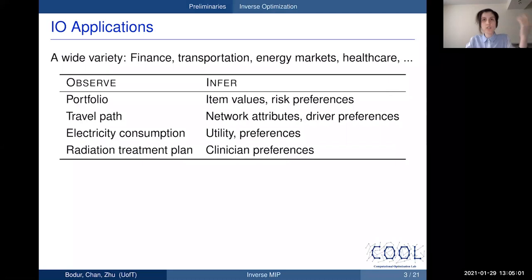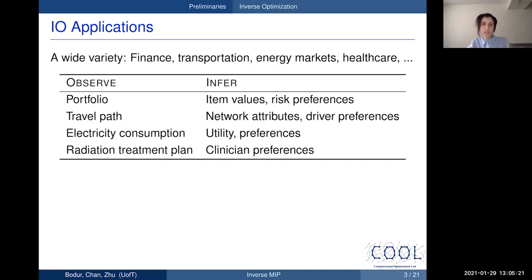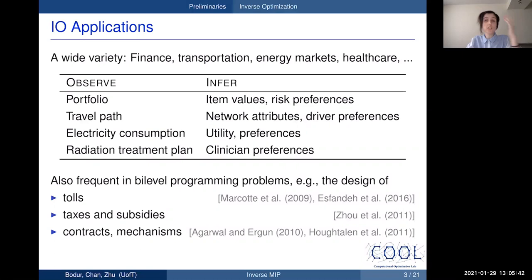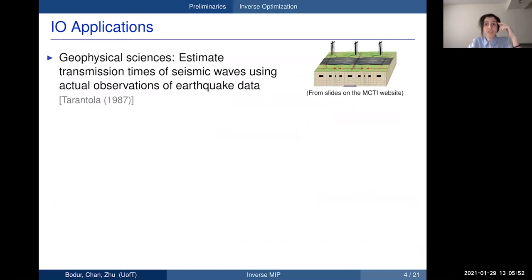Inverse optimization has found a wide range of applications. In portfolio optimization, given an observed portfolio, we might infer someone's perception of item values or risk preferences. In routing problems, we can use travel paths to infer network attributes or driver preferences. The primary goal is often not just to learn unobserved parameters but to use those inferences in decision making — such as building new portfolios or designing networks.